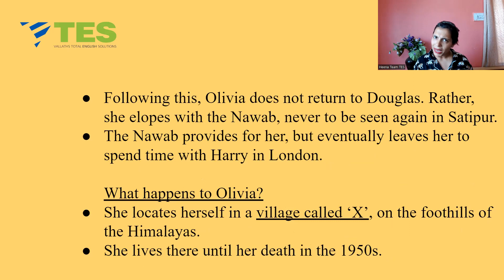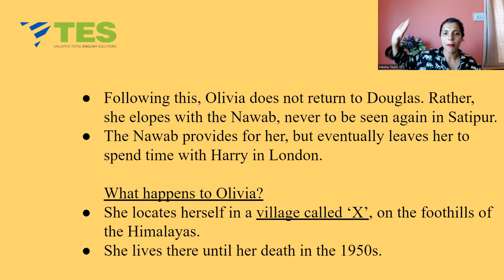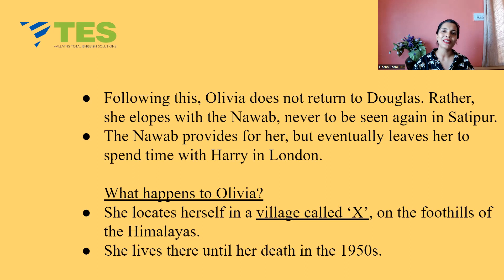The Nawab provides for Olivia but eventually leaves her to spend time with Harry in London. Olivia then locates herself in a village called X on the foothills of the Himalayas, where she lives until her death in the 1950s. And with this, we are done with the first story of Heat and Dust.